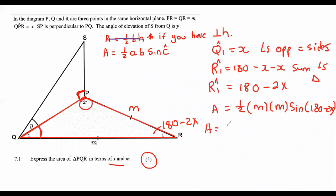Let's just get that a little bit better. So, that will become a half M squared sin of 180 minus 2X.